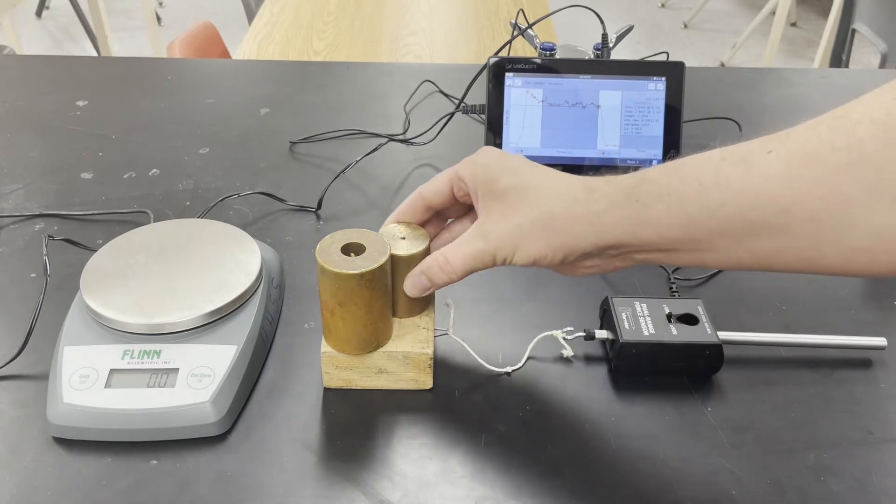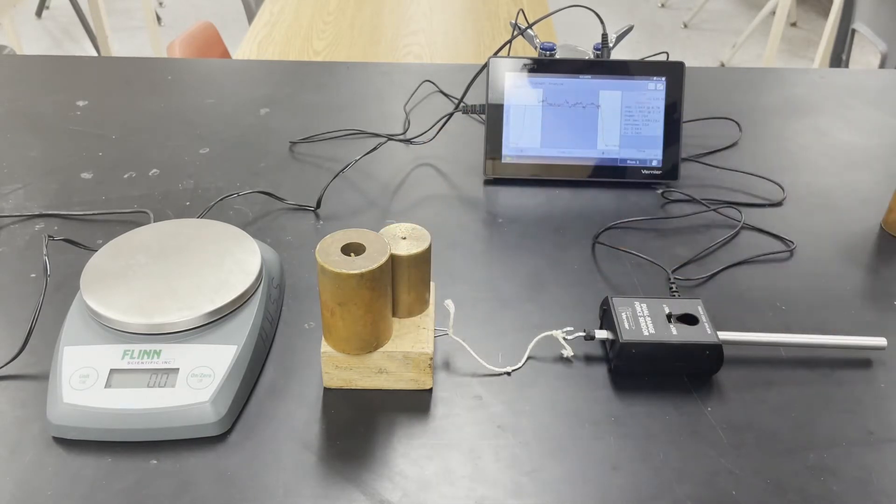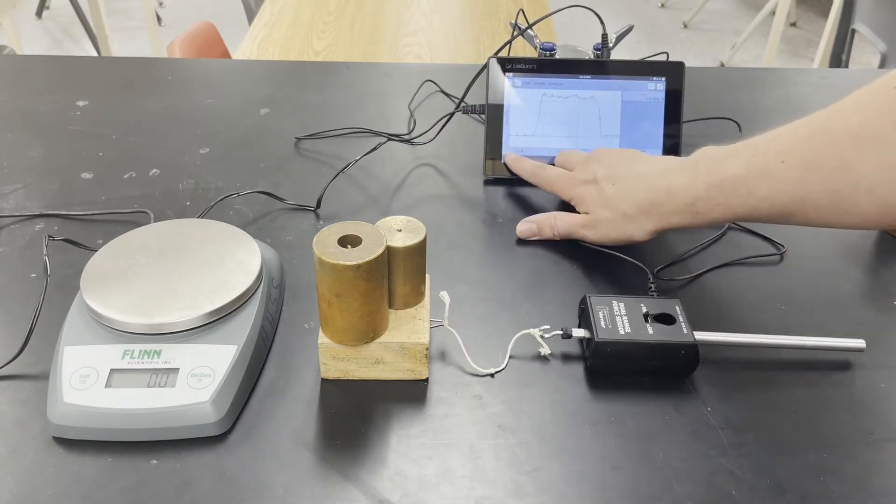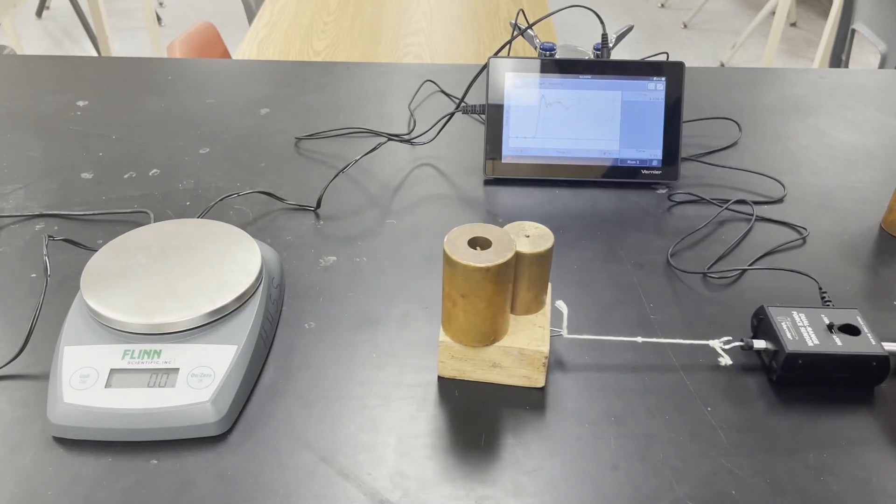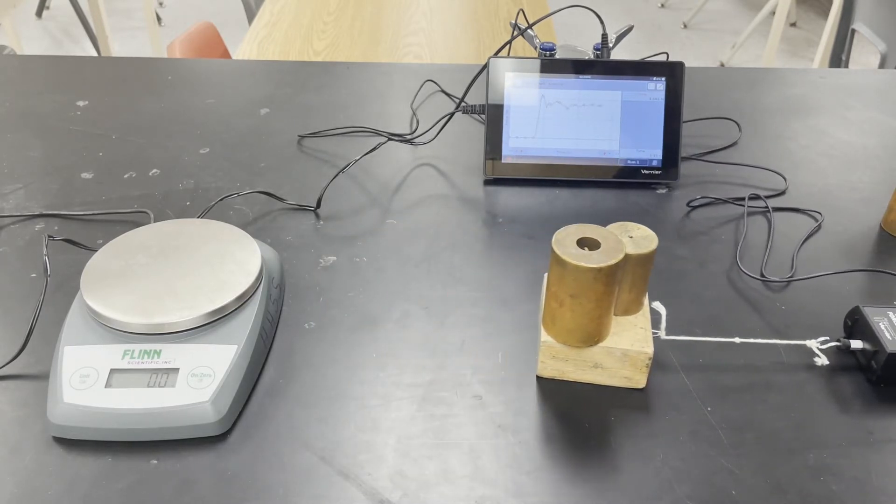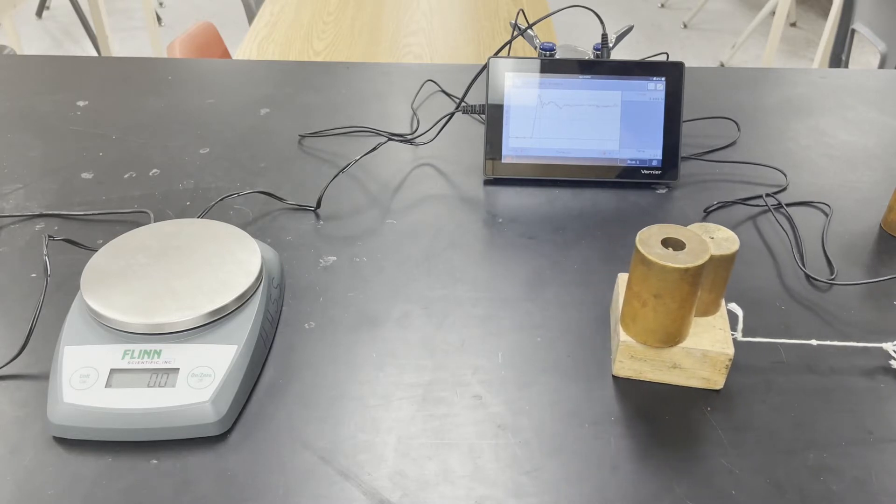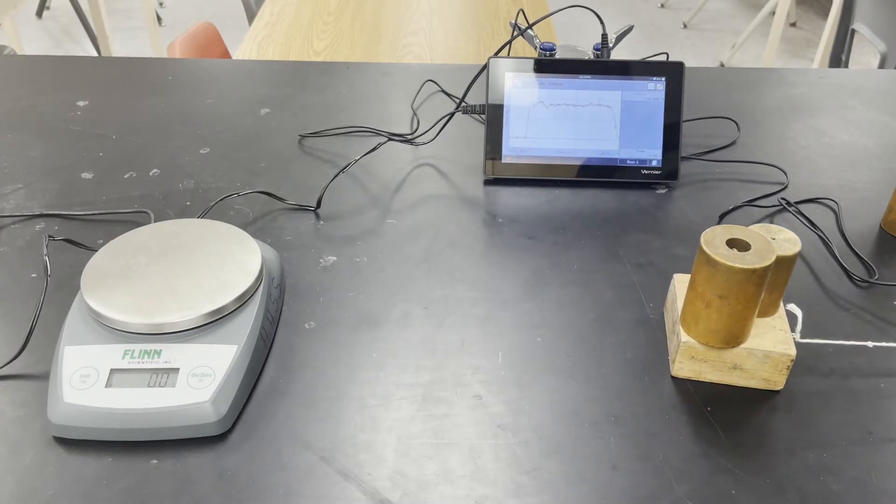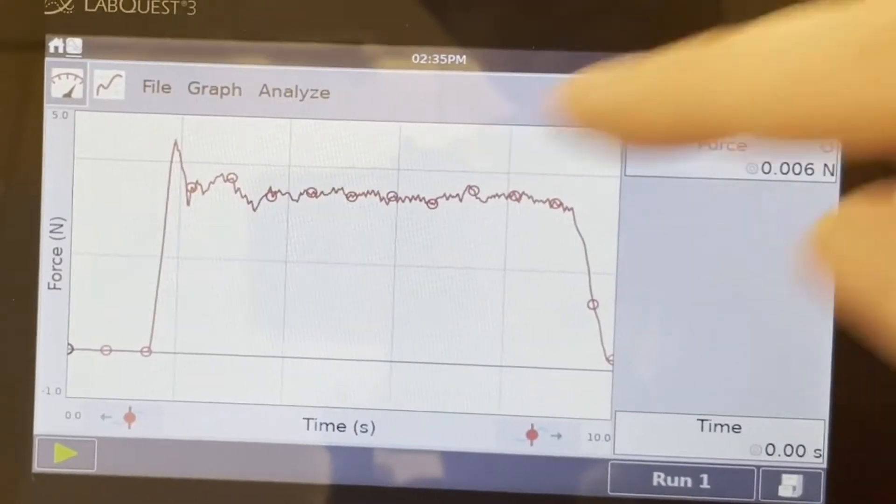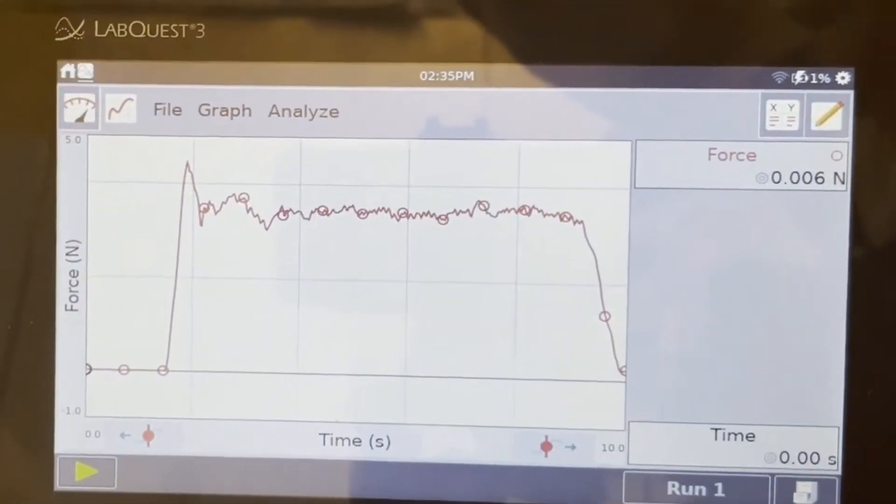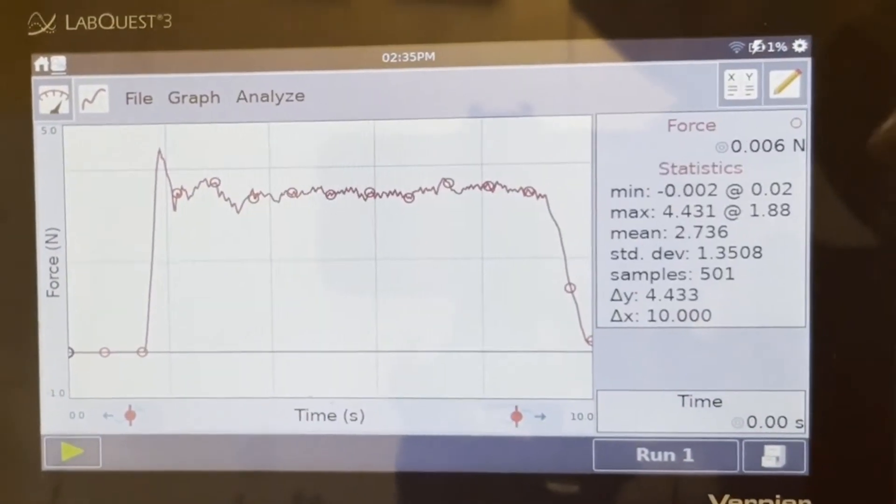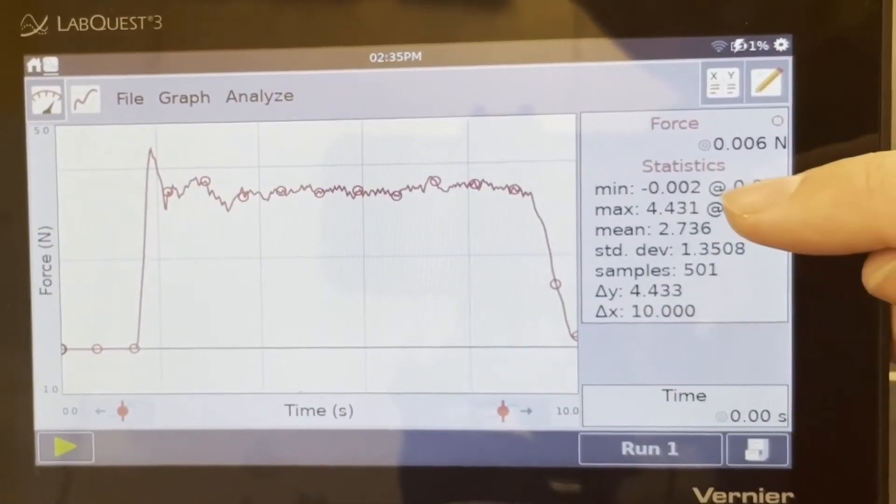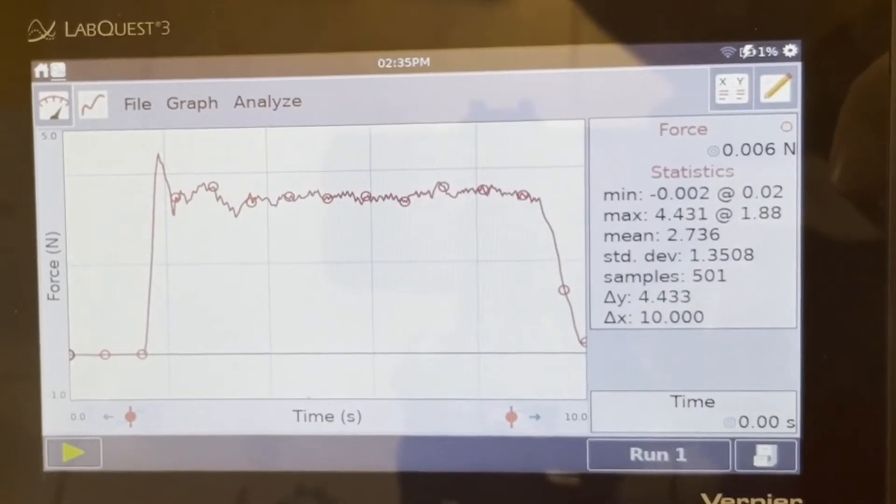We're adding 500 grams more to our mass. Let's look at what that maximum value for static friction is. It looks like it is max 4.431 newtons.